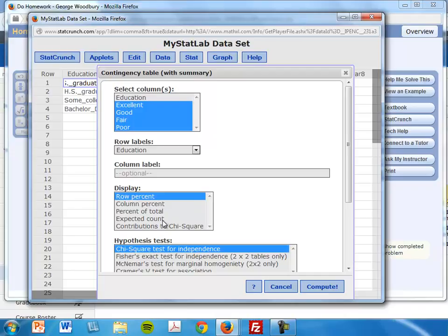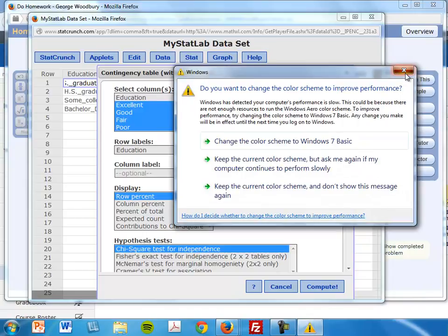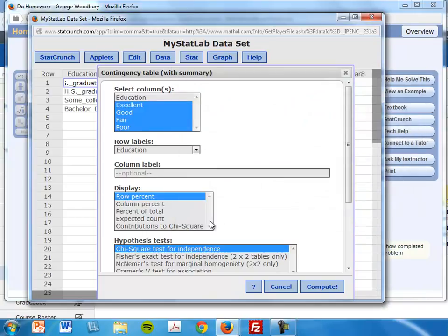Also notice expected count is, if you ever need the expected frequency, just click on this display. And contributions to chi-square will basically tell you which box contributes the most to chi-square.